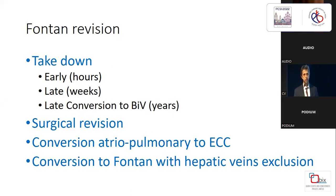This is a pressure-volume loop, which is supposed to emphasize the importance of the pump function. You need to have a nice systolic function, a very good diastolic function, and an appropriate volume loading. Everything is at stake in the Fontan circulation. The systolic function can be impaired progressively, the diastolic function is impaired, and the volume loading is inappropriate.